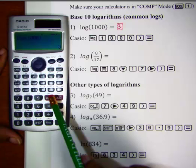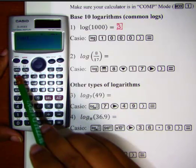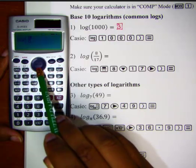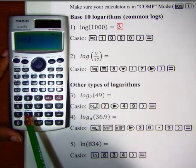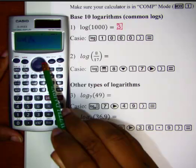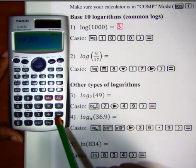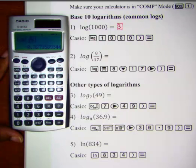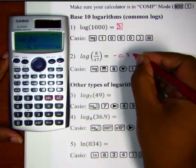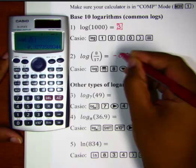Let's hit our log key again and then we will hit our fraction button and then we will enter 8 in the numerator. Use our navigation circle to drop down, enter in 17, move out of the denominator, close it out, hit equals and we get negative 0.3274. We will round it there.